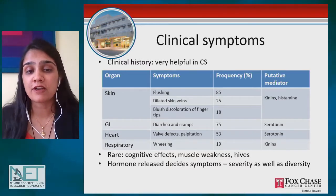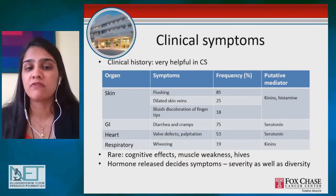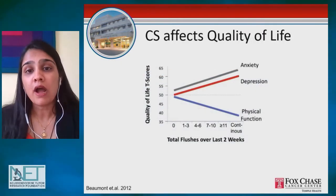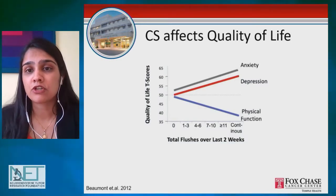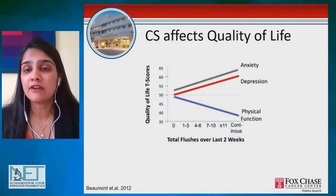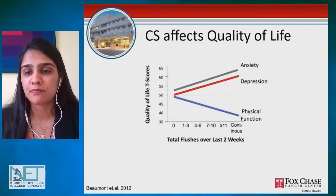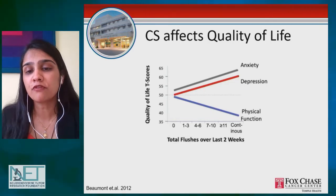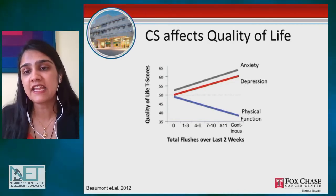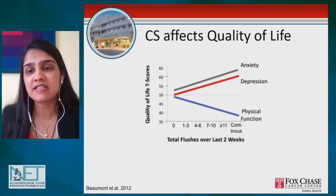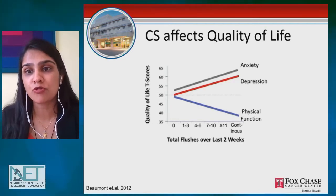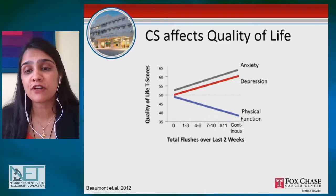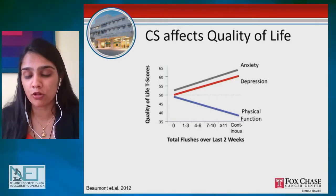There's also the effect on the heart in terms of valve defects and palpitations, and respiratory issues with wheezing. All these symptoms that happen with carcinoid syndrome very strongly affect a person's quality of life. As you can see in this chart, as the total number of flushing episodes increases, the incidence of anxiety and depression goes up — because it also reminds you of your cancer — and physical functioning score goes down, all of which strongly affects overall quality of life.